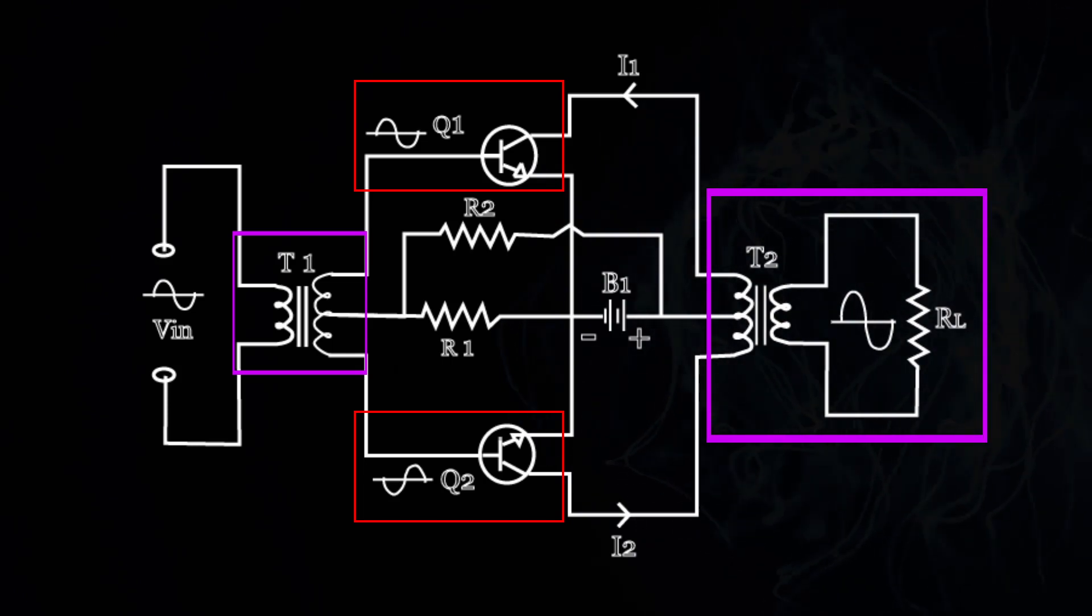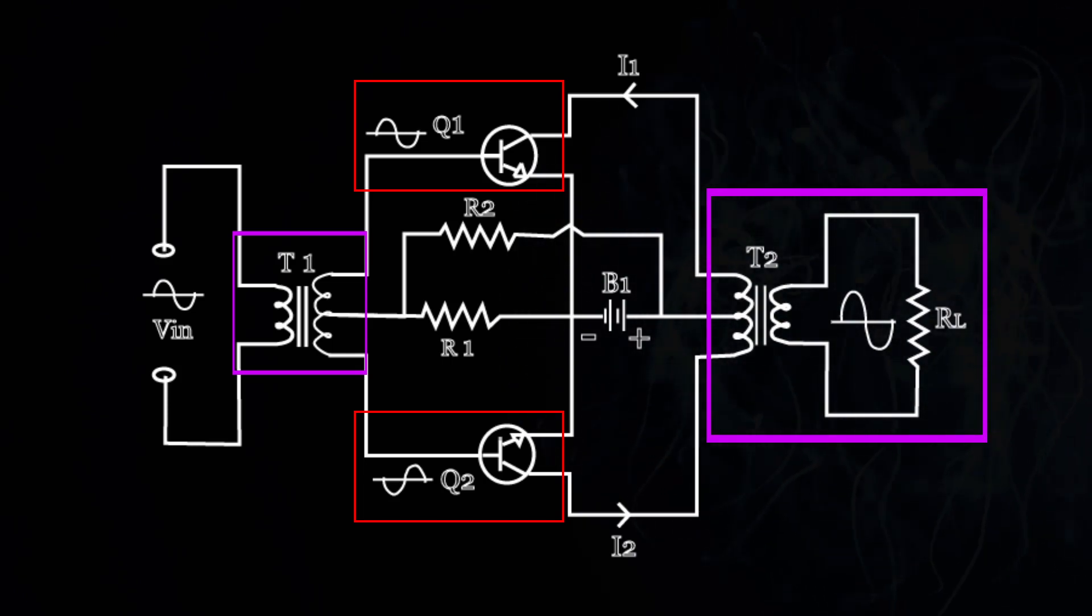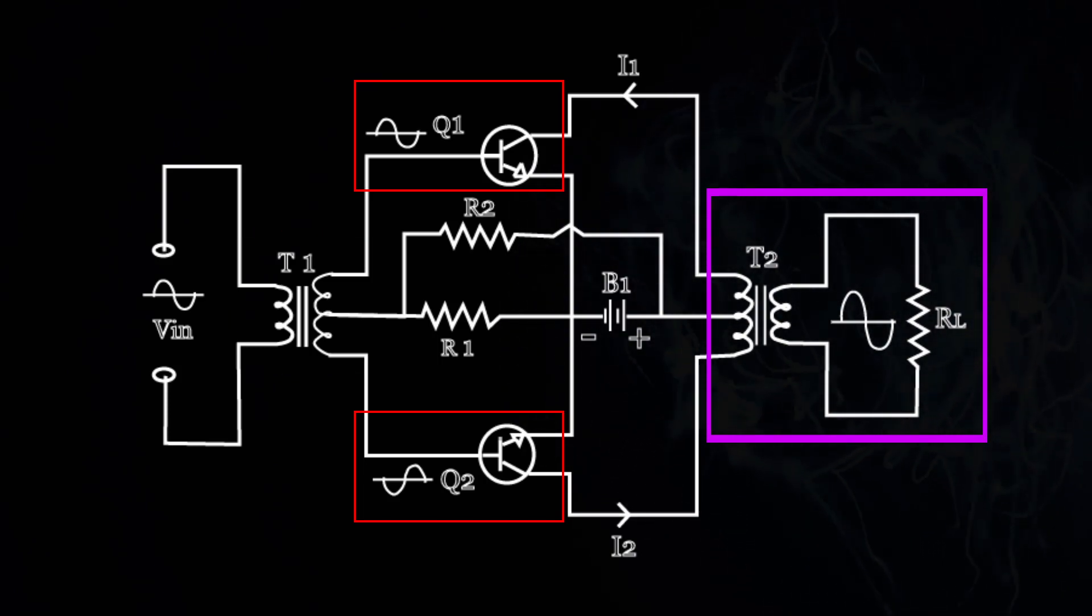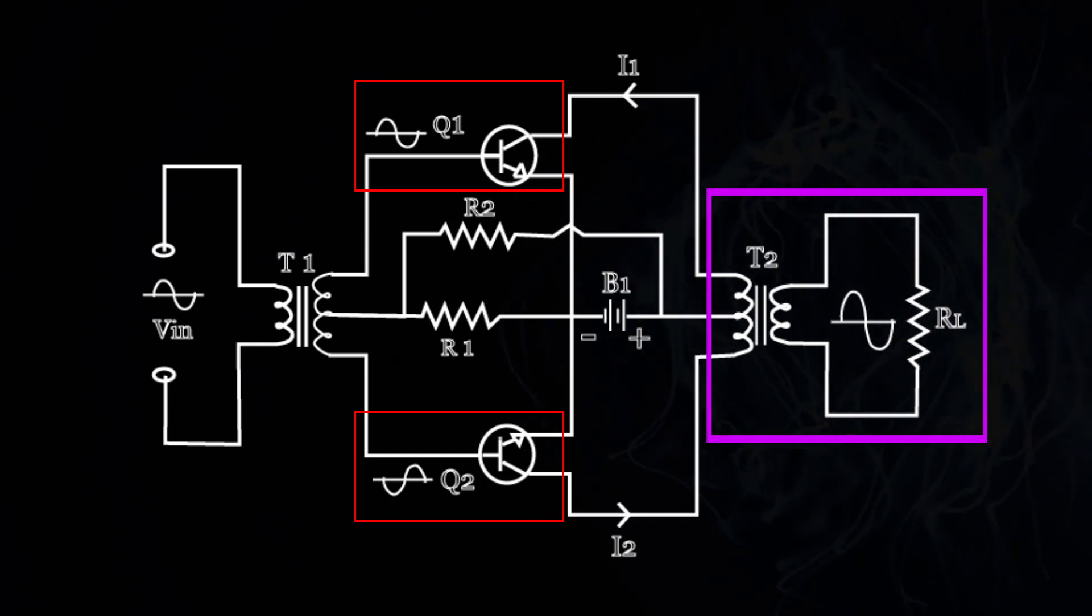Quiescent current of Q1 and Q2 flows in opposite directions through the corresponding halves of the primary of T2, and as a result there will be no magnetic saturation.